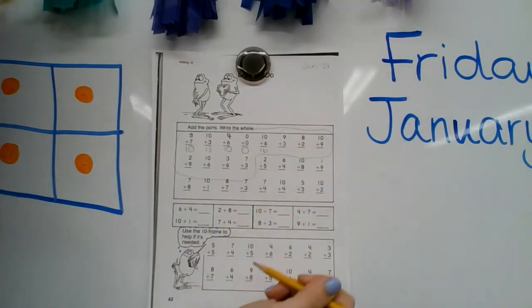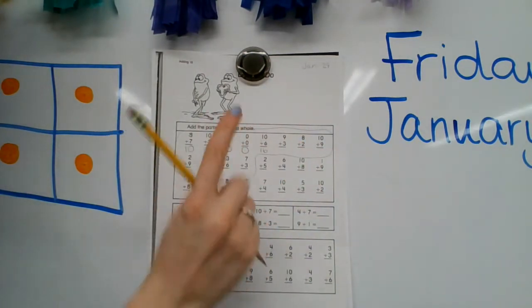9 plus 3. That's a pretty quick, easy count on. 9, 10, 11, 12.